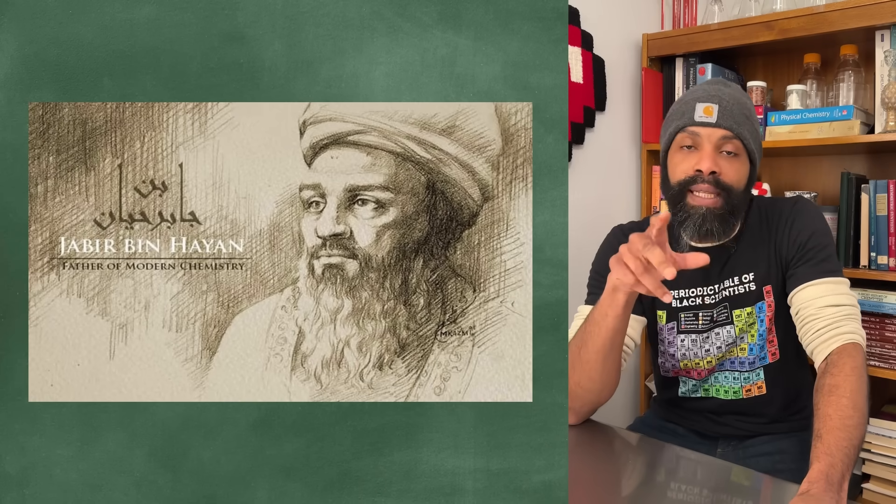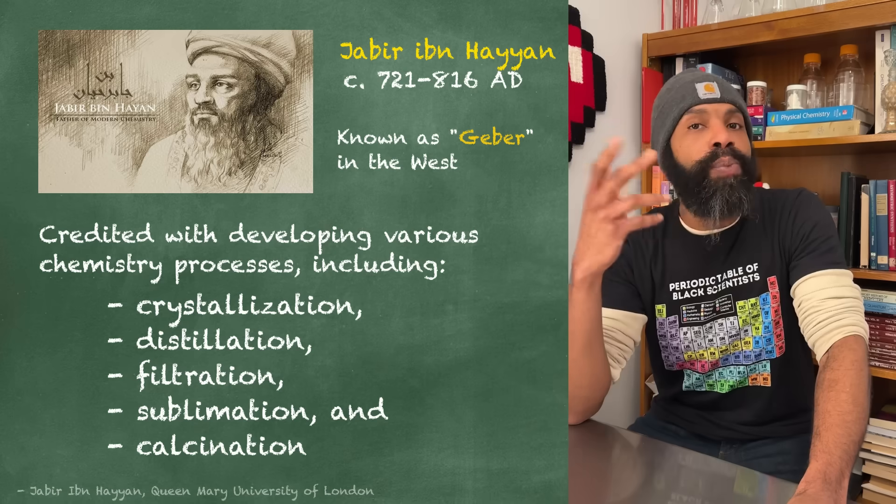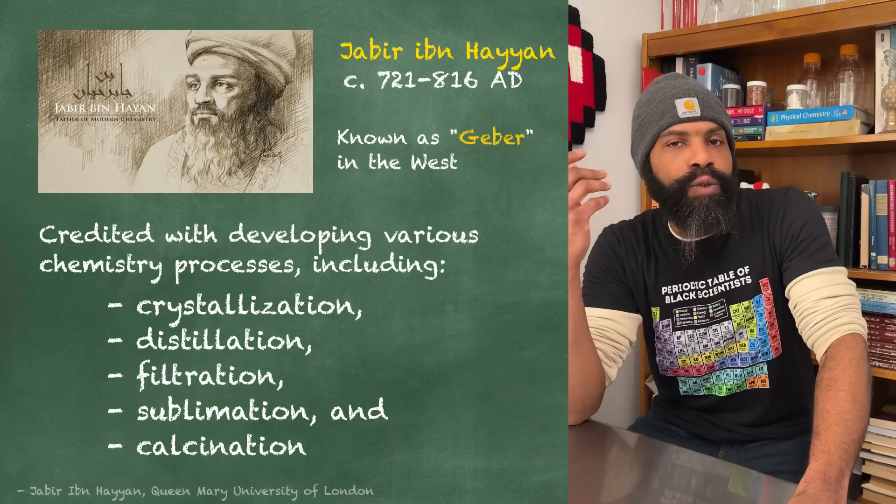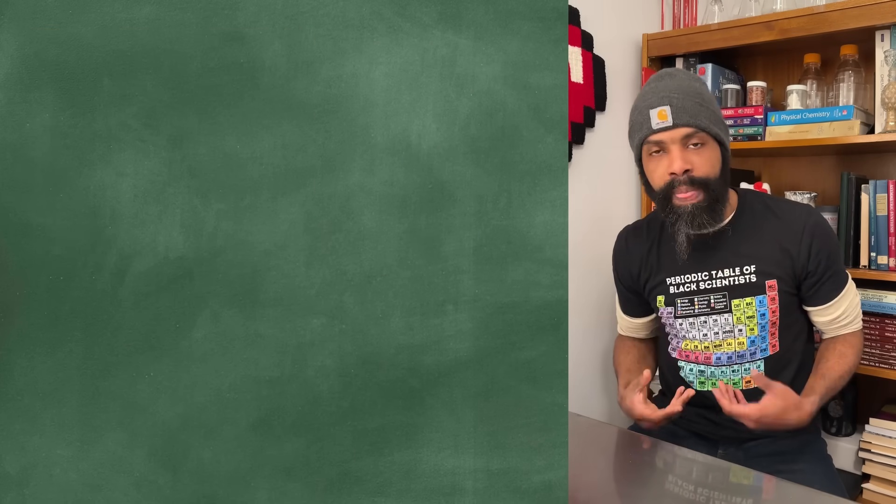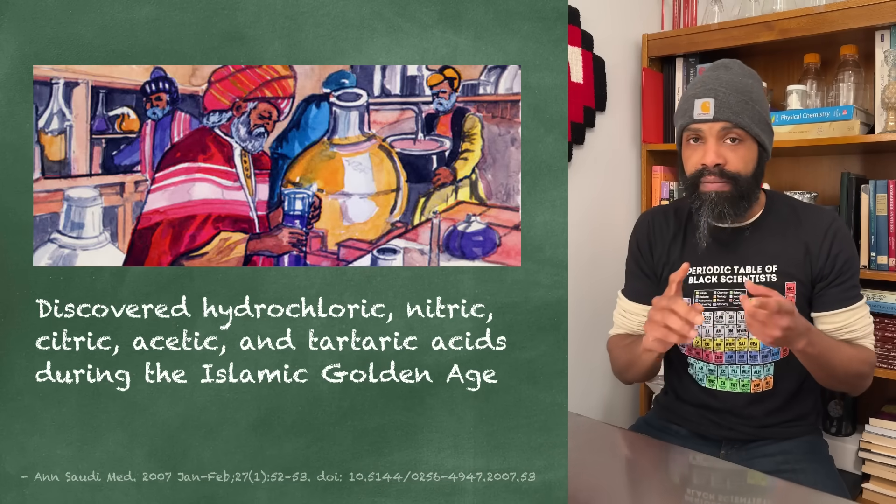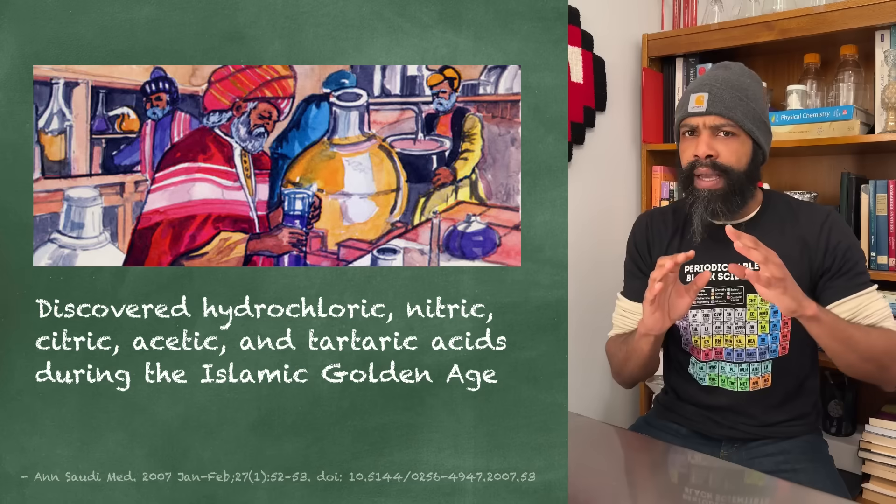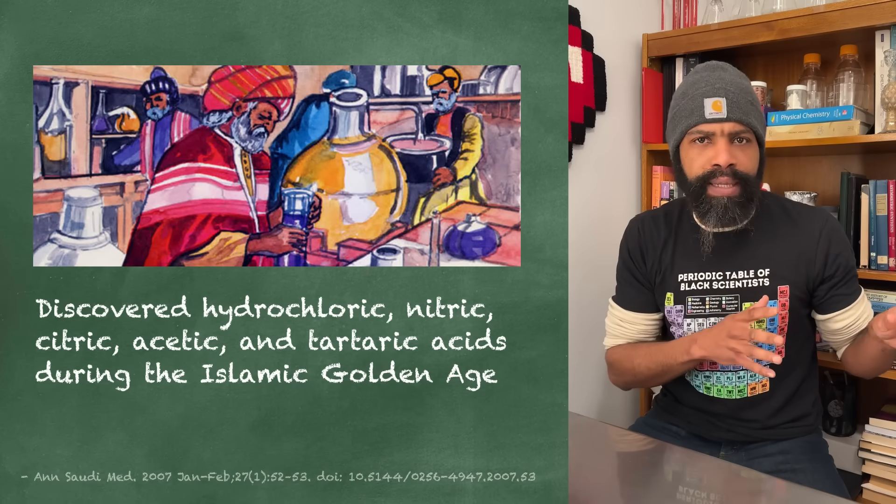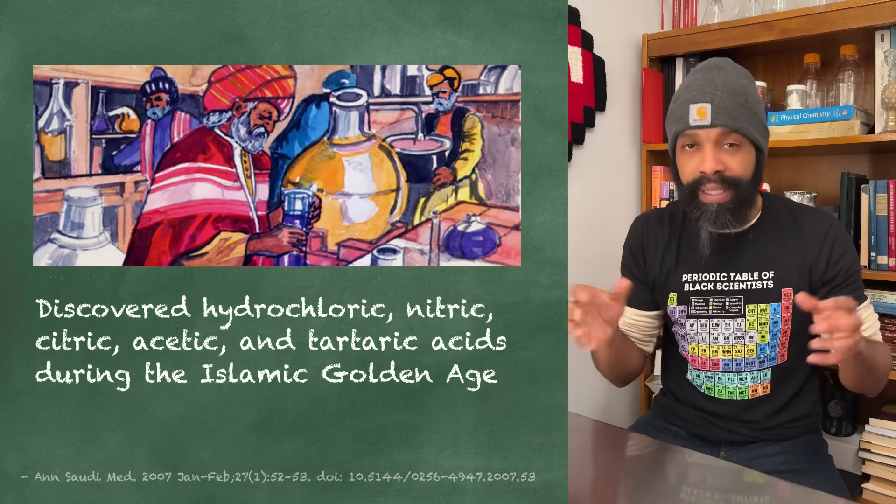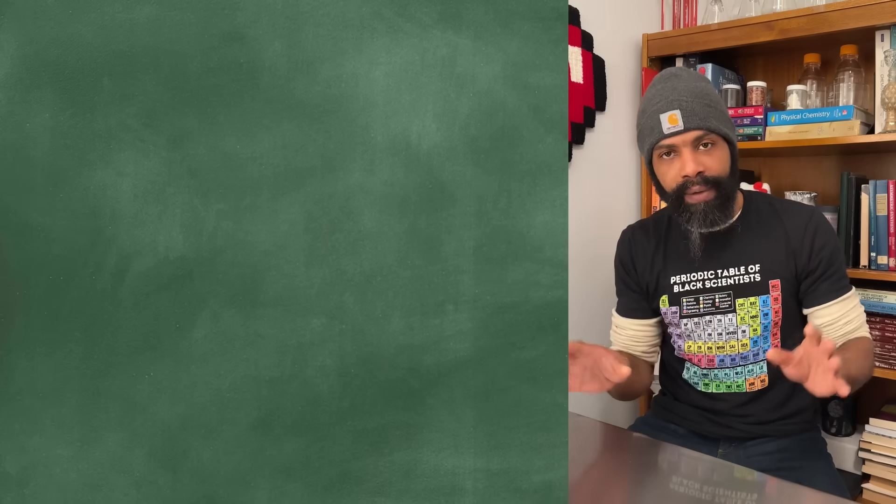This Persian alchemist by the name of Jabir ibn Hayyan isolated a substance whose properties track to what we know now to be citric acid. Side note: this guy Jabir also discovered hydrochloric acid, nitric acid, tartaric acid, and a few other chemical techniques. He's a very interesting character, definitely going to get his own video.